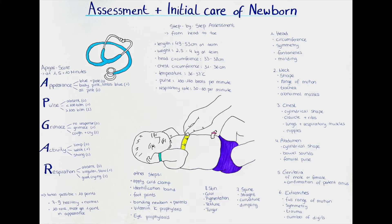The first A is for Appearance — basically how does the newborn look? How does the skin look? Does it look like it's getting blood and oxygen, or does it look cyanotic — either pale or bluish? Cyanosis means the blood is not properly oxygenated. If the skin looks fine without any cyanosis we give two points; if the skin looks slightly cyanotic we give one point; and if the skin looks very pale or blue we give zero points.